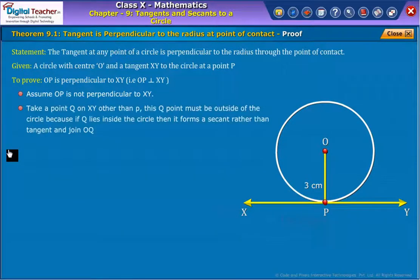Now, take a point Q on XY other than P. This Q point must be outside of the circle, because if Q lies inside the circle, then it forms a secant rather than tangent. Join OQ.